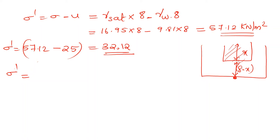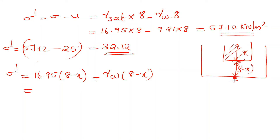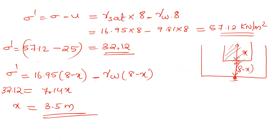Effective stress equals total stress minus pore pressure. After removing x meters: sigma dash equals gamma_sat into (8 minus x) minus gamma_w into (8 minus x). This simplifies to (gamma_sat minus gamma_w) into (8 minus x) equals 32.12. Solving: 7.14x gives x approximately equal to 3.5 meters. So 3.5 meters of clay must be removed by dredging.